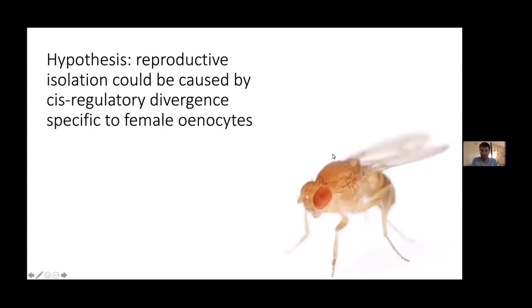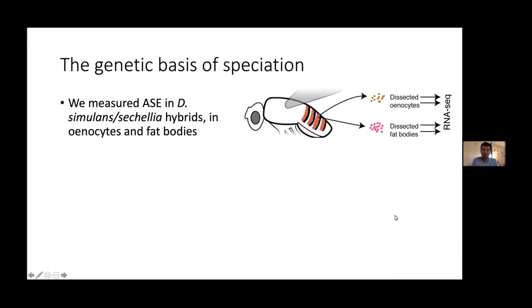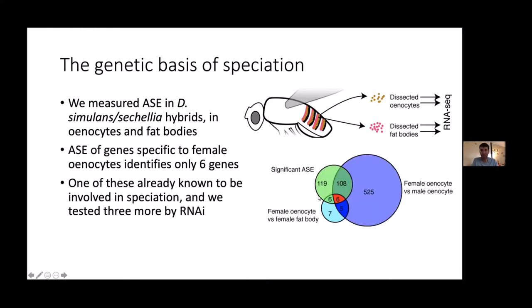We approached the problem with a specific hypothesis — that reproductive isolation could be caused by cis-regulatory divergence specific to female enocytes, since in the species we were looking at, females show the greatest hydrocarbon divergence. We created F1 hybrids between two Drosophila species, Simulans and Cichelia, which have very different hydrocarbon profiles, then isolated two different cell types — enocytes as well as the adjacent fat bodies as a control — for both male and female hybrids, and performed RNA-seq to map ASE throughout the genome.